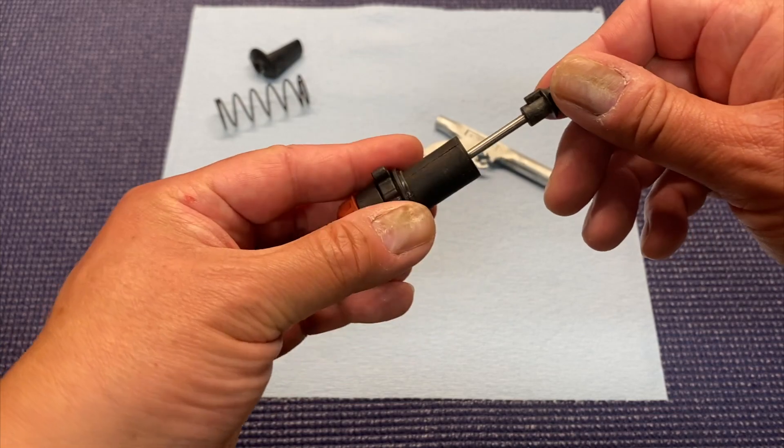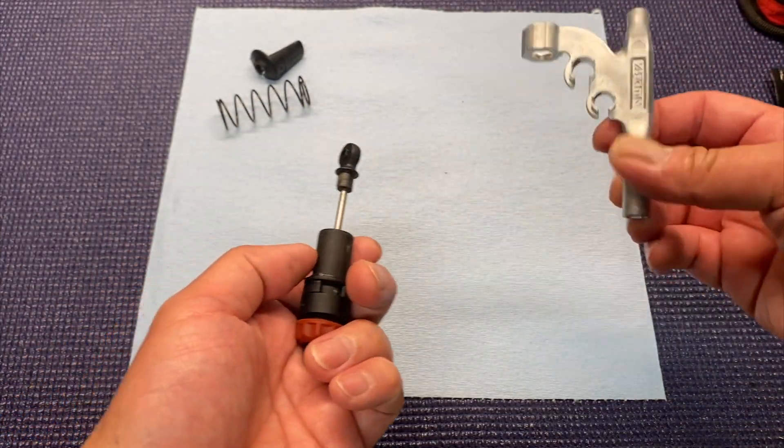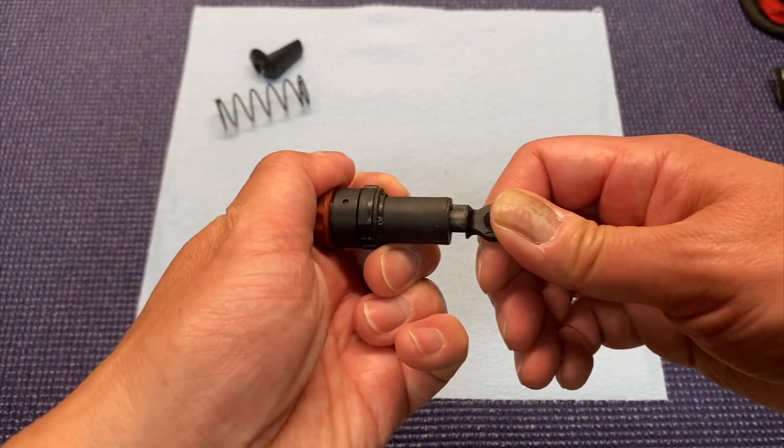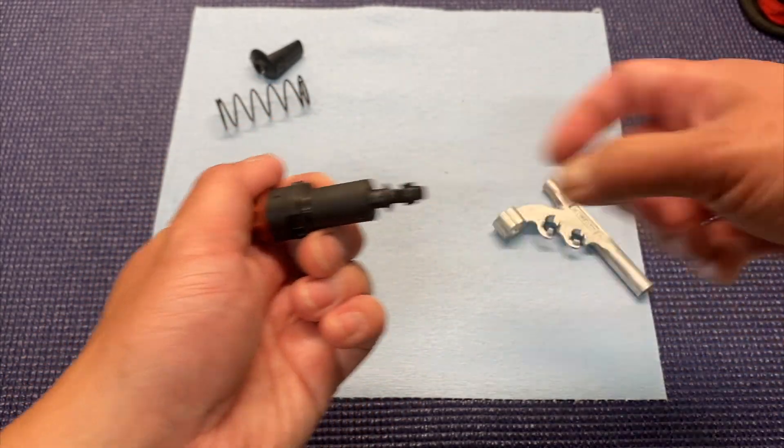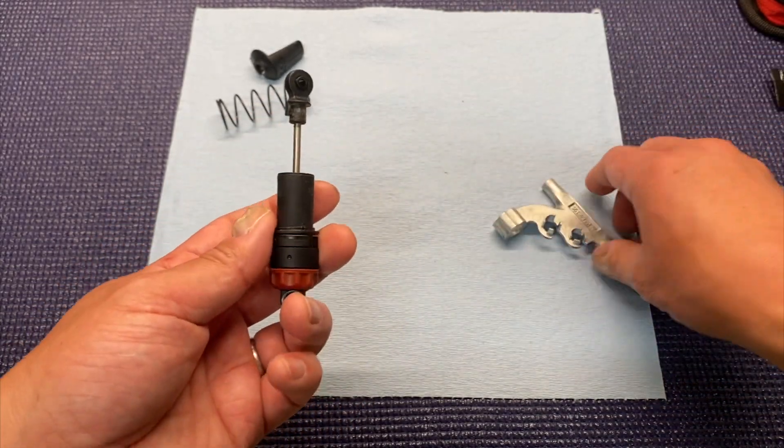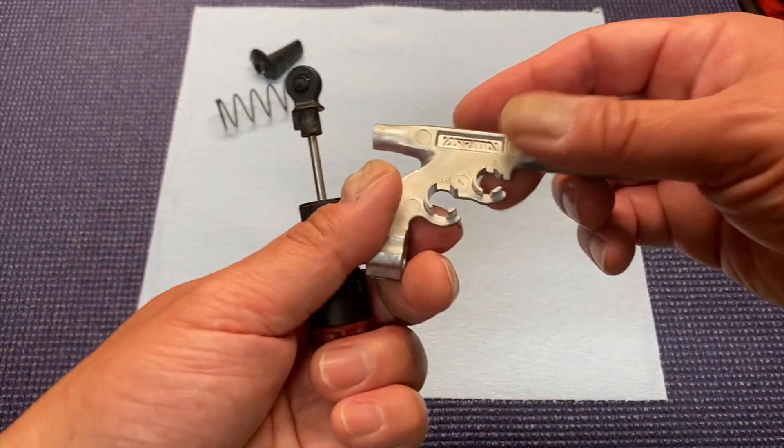And then the cool thing is, now you actually use this tool to unscrew the shocks. The old style, you would push this thing in and it had the nubs already on there and you would unscrew it this way. I've got a video on how to do that. But this new one, you actually use this new shock tool.